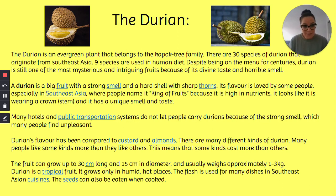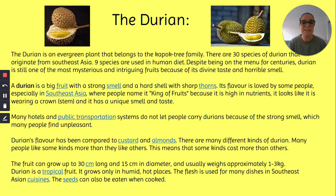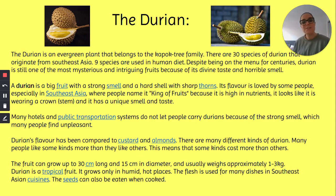I'm going to read to you now the information on the durian. The durian is an evergreen plant that belongs to the Kapok tree family. There are 30 species of durian, and they originate from Southeast Asia. Nine of these species are okay for the human diet for us to eat. Despite being on the menu for centuries, durian is still one of the most mysterious and intriguing fruits because of its divine taste and its horrible smell.